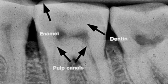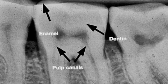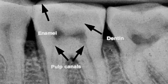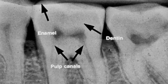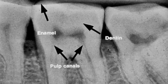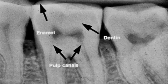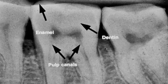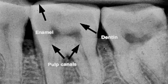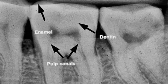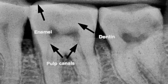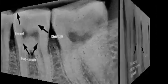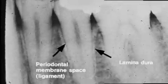The dentin makes up the majority of the tooth and is radiopaque. The pulp is radiolucent and is the dark area in the center of the tooth and down into the roots. As people age, the pulp does become calcified and more opaque.